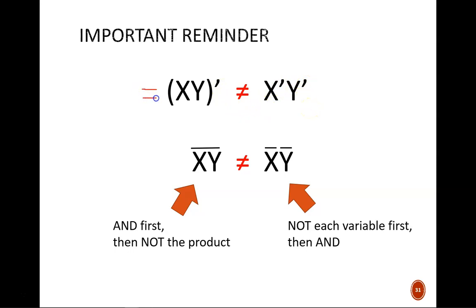In fact, what would this left side equal? Well, taken directly from DeMorgan's Theorems, this equals X prime OR Y prime. Clearly, that is not the same as X prime AND Y prime.